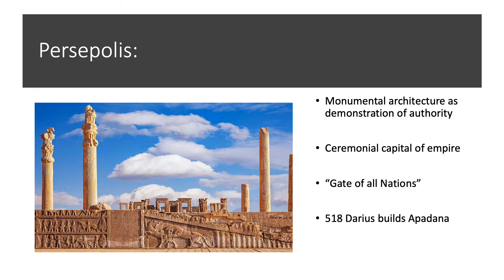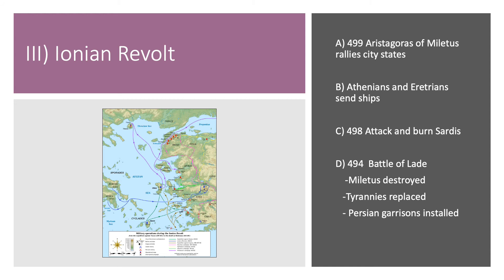In 518 BC, Darius builds the Apadana — a reception hall also at Persepolis, though many of the buildings there are no longer fully intact today. The immediate catalyst for the Persian invasion of mainland Greece was a revolt in Ionian Greece — city-states in Anatolia, modern-day Turkey, across the Aegean from mainland Greece. These city-states had been subject to Persian authority for some time, but in 499 BC the tyrant of Miletus, Aristagoras, got a number of other city-states to overthrow the Persian presence and declare independence.